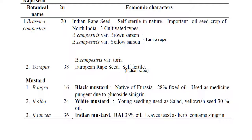Coming to economic characters of different Brassica species: Brassica campestris has chromosome number 20 and is called Indian rapeseed. It is self-sterile and an important oilseed crop of North India. The cultivated tribes are Brassica campestris var. Brown Sarson and var. Yellow Sarson, and also var. Toria, called Indian rape. Brassica napus has chromosome number 38 and is called European rapeseed, which is self-fertile. Brassica campestris is self-sterile and Brassica napus is self-fertile.